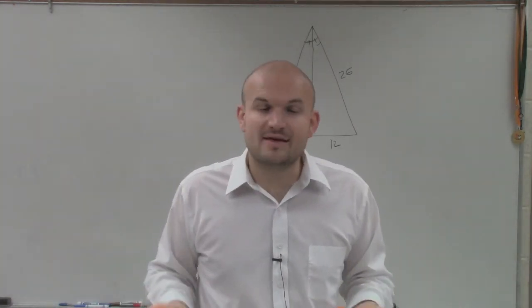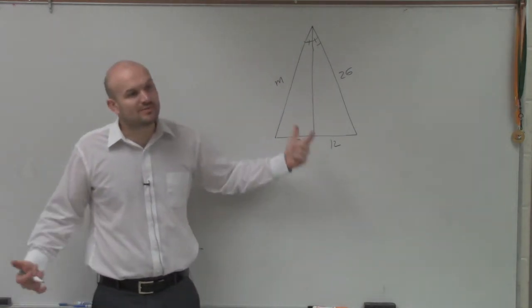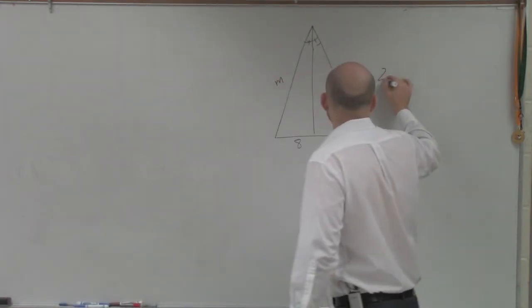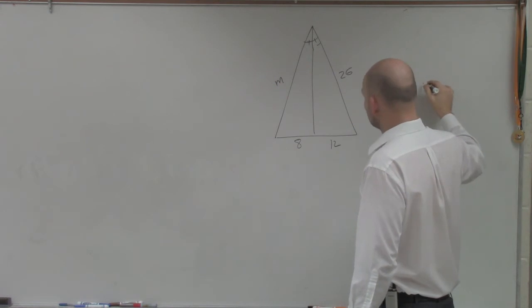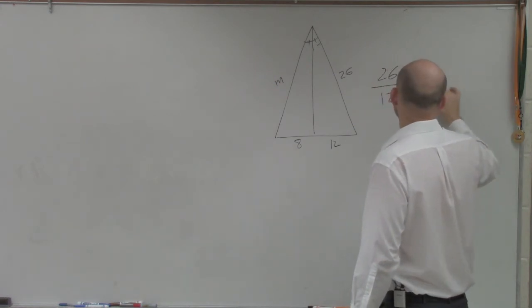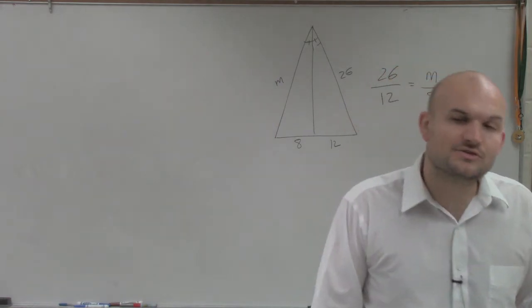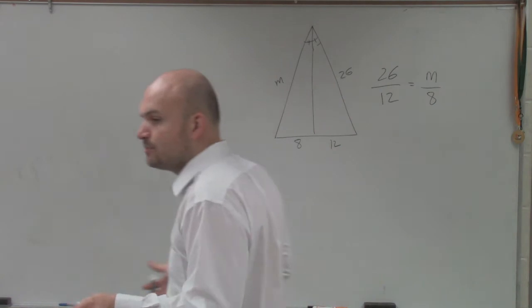So now we can say that this kind of broke it up into two different triangles, right? Well, it broke it up into two triangles that we could say are now proportionate to each other, where I can now say that 26 is to 12 as m is to 8. So now they are proportionate. So an angle bisector creates two different triangles that are going to be proportionate to each other.